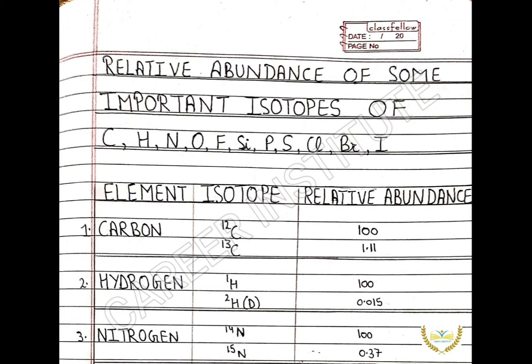This table shows the relative abundance of some important isotopes of carbon, hydrogen, nitrogen, oxygen, fluorine, silicon, phosphorus, sulfur, chlorine, bromine, and iodine.